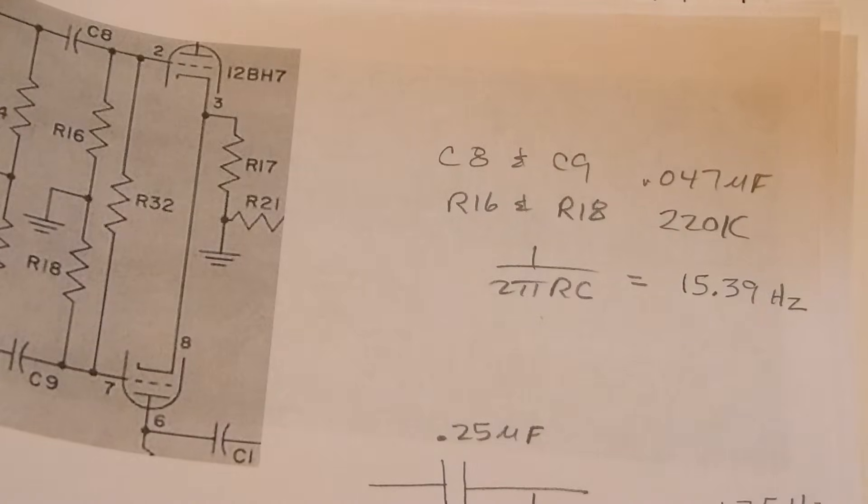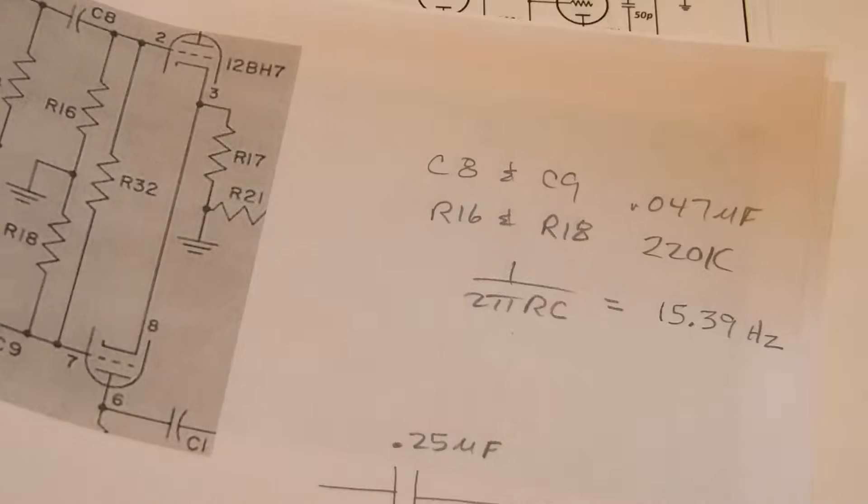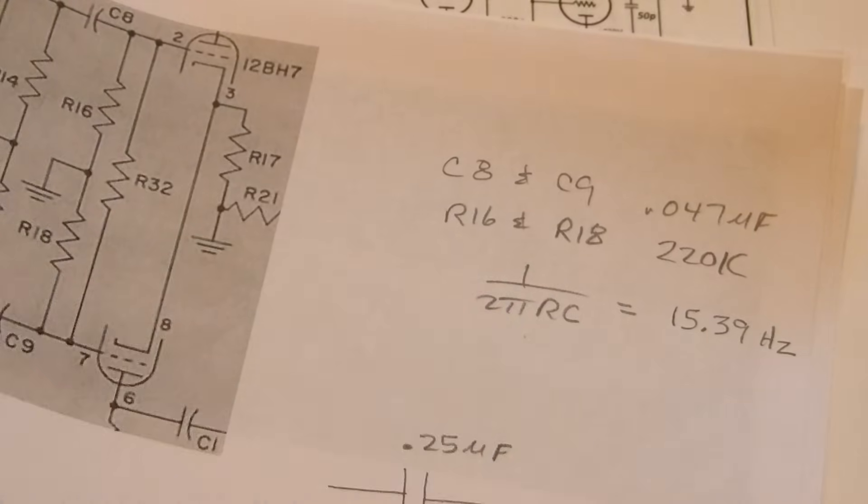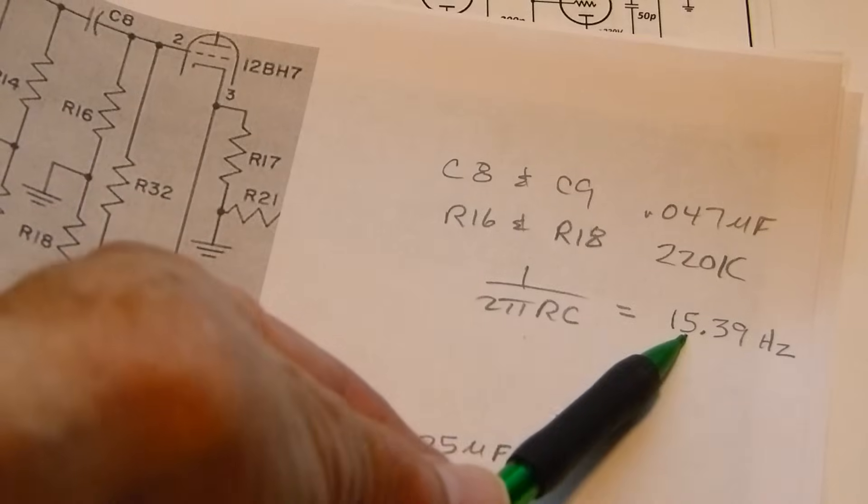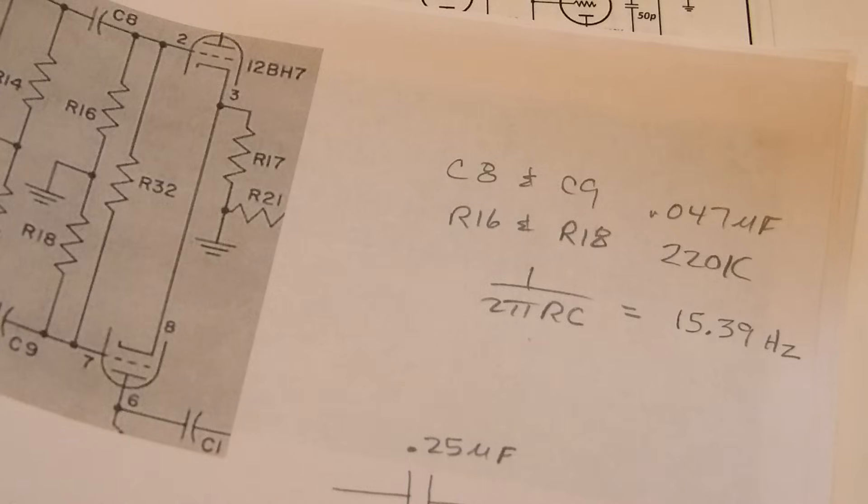And their resistor is 220k. They're not big huge capacitors, and what that does is gives us a corner frequency - the 3dB point where it starts attenuating. This is called a high pass filter. By the formula one over two pi RC, it's 15 hertz, 15.39 hertz if all the component values are exact.